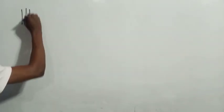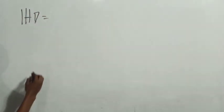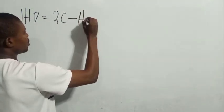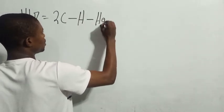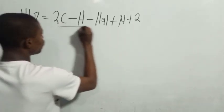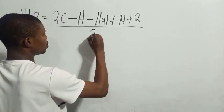What you want to do here is make sure you have your pen, your notebook, and your calculator. Make sure you have your calculator here because you want to work straight. The formula to calculate IAG is: IAG equals 2C minus H minus X plus N plus 2, all over 2.